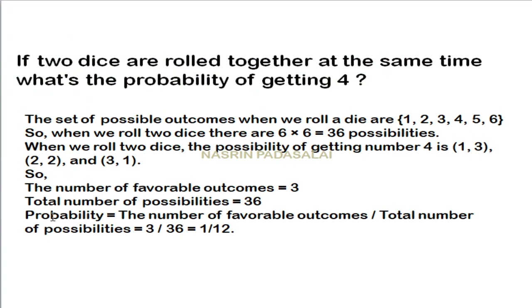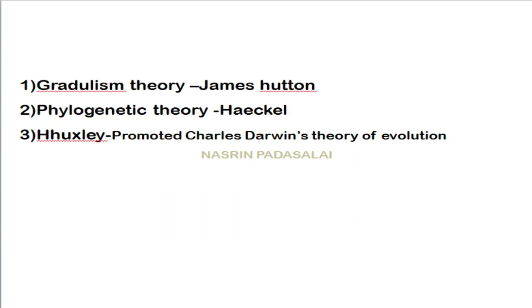A general aptitude question: if two dice are rolled together, what is the probability of getting a sum of 4? The correct answer is 1/12. Rolling one die gives 6 possibilities; two dice give 36. The number of favorable outcomes for a sum of 4 is 3, so probability = 3/36 = 1/12.